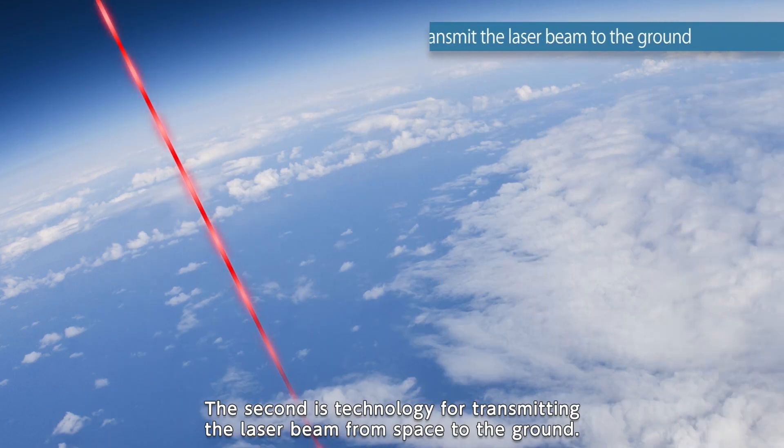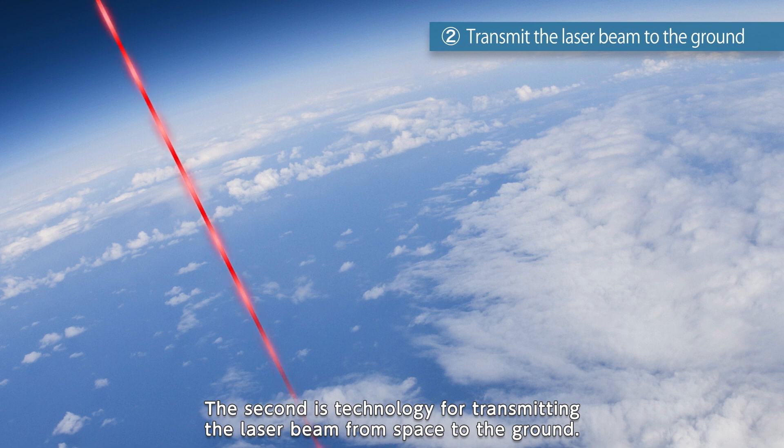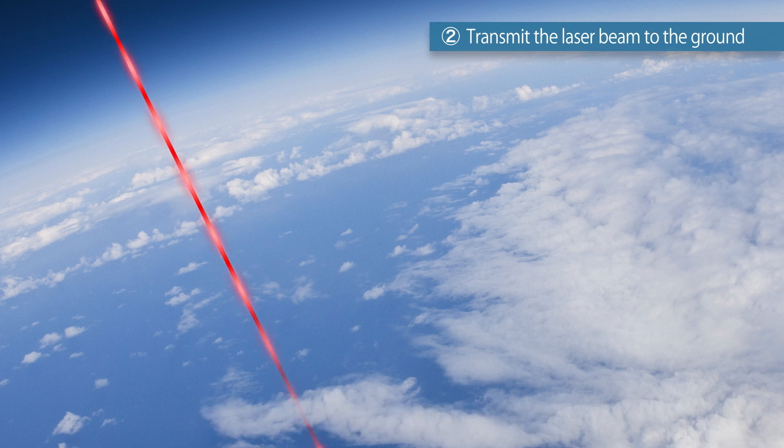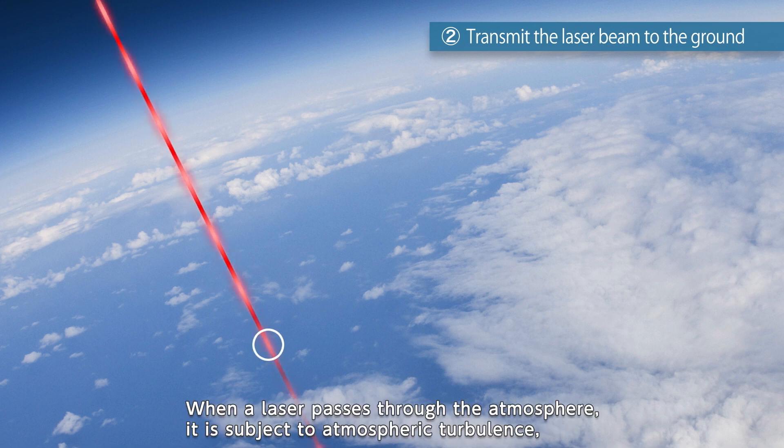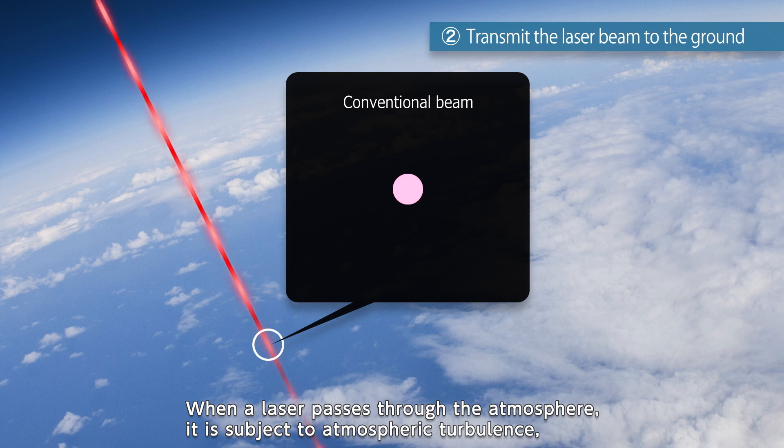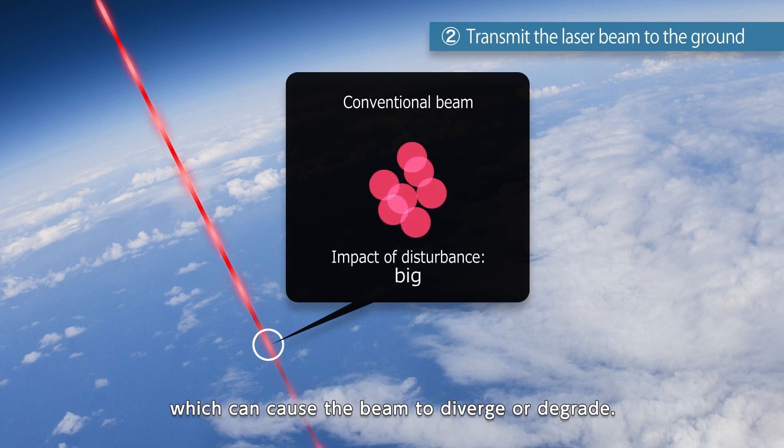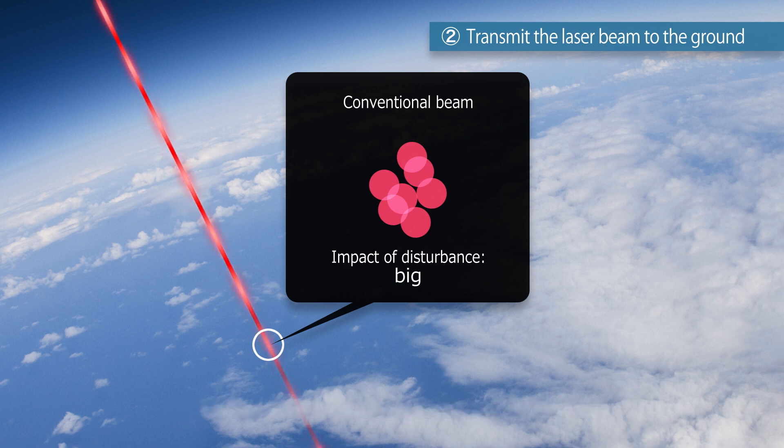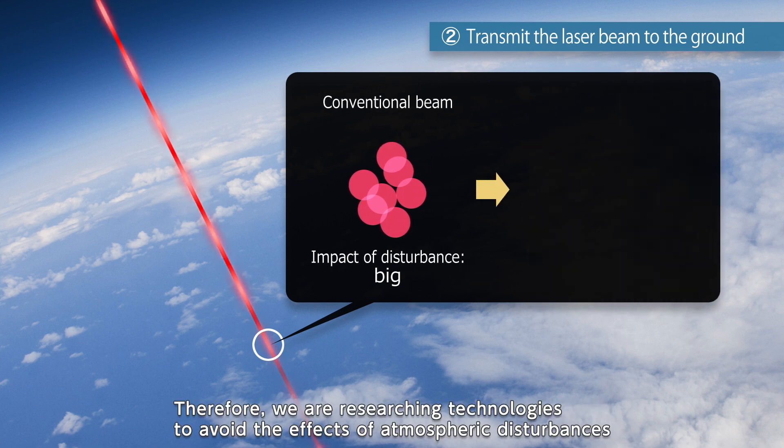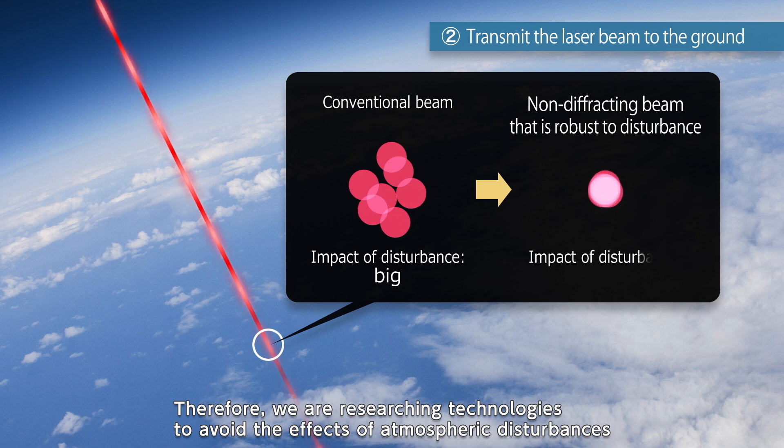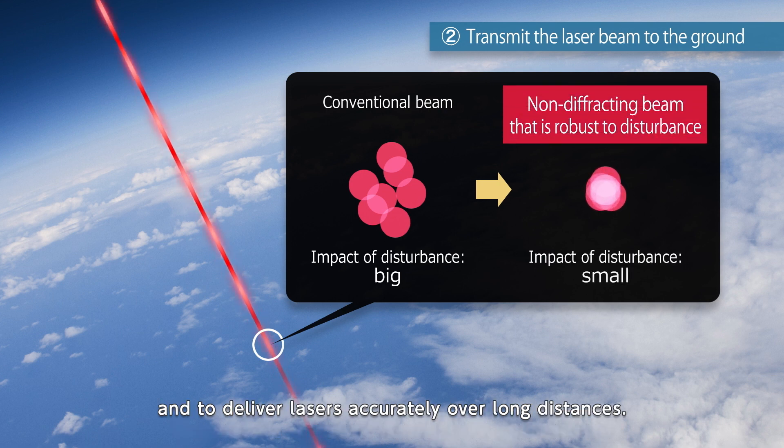The second is technology for transmitting the laser beam from space to the ground. When a laser passes through the atmosphere, it is subject to atmospheric turbulence, which can cause the beam to diverge or degrade. Therefore, we are researching technologies to avoid the effects of atmospheric disturbances and to deliver lasers accurately over long distances.